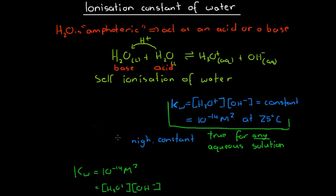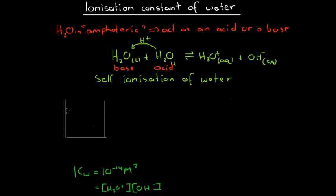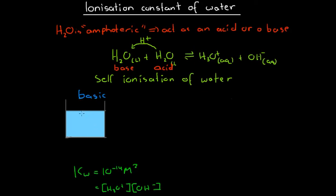We have a basic solution — a stock standard solution with some sort of base dissolved in it. After dissolving the base we've run a few tests on this solution and found that the concentration of hydroxide is equal to 2.4×10⁻³ mol/L. We want to figure out the pH of this basic solution, but the only tools available allow us to measure the concentration of hydroxide. So we need to go from the concentration of hydroxide to a pH value.